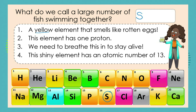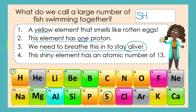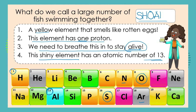Clue two: this element has one proton — that gives us atomic number 1, so the second letter is H. Clue three: we need to breathe this in to stay alive — that's oxygen, so we add O. Clue four: this shiny element has an atomic number of 13 — let's go straight to 13 and we get Al. A large group of fish swimming together is called a SHOAL.